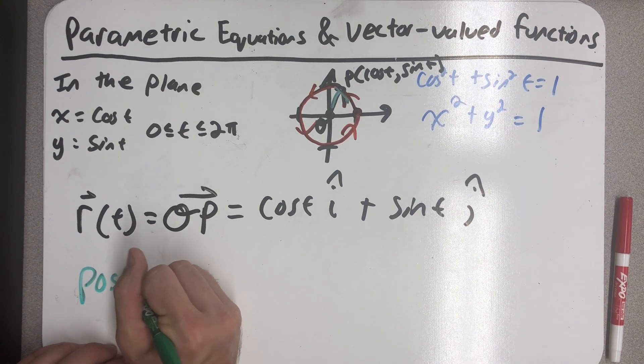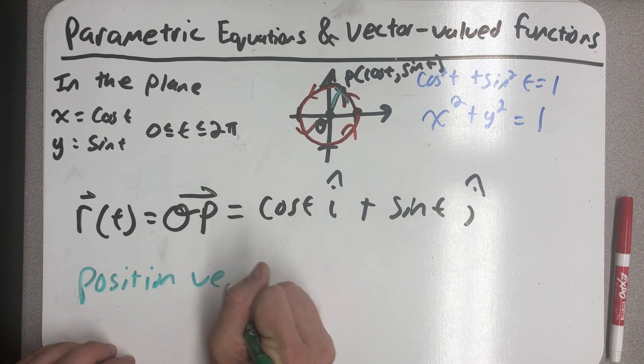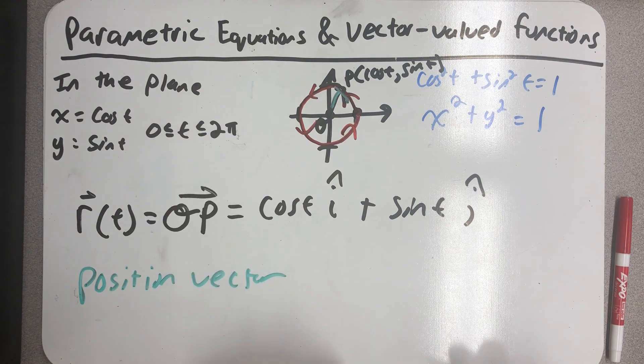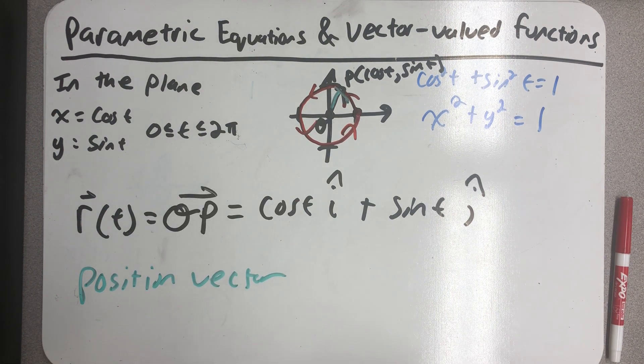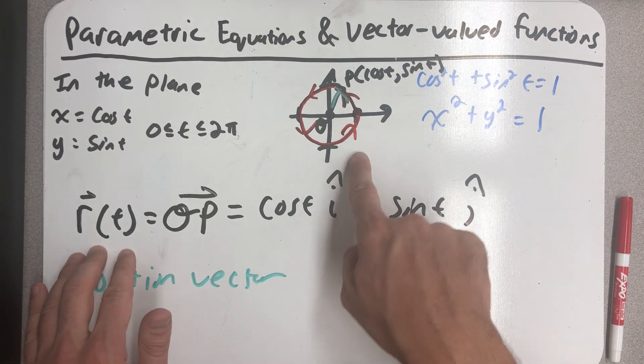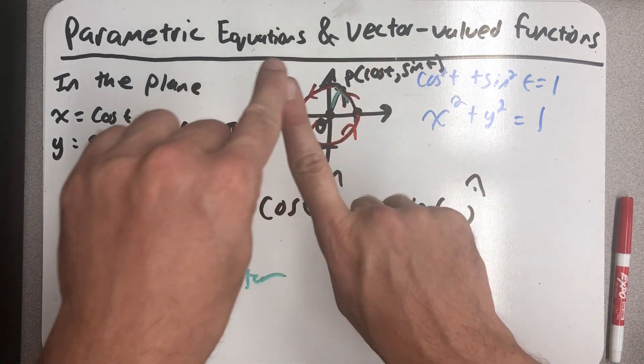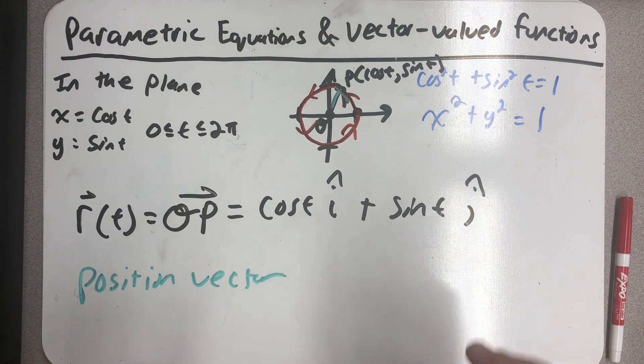We call this function a vector-valued function, because for every value of t we get a vector. We also call it a position vector. Because for every value of t, it points to a point on the curve. And so this is another way of thinking about this parametric curve, right? Because as my vector points to points on it, we could imagine it tracing out the curve.